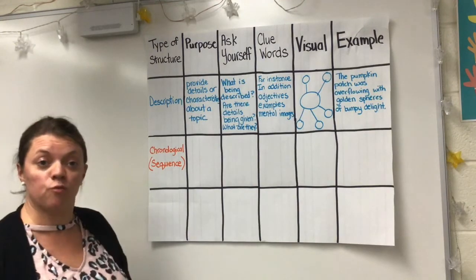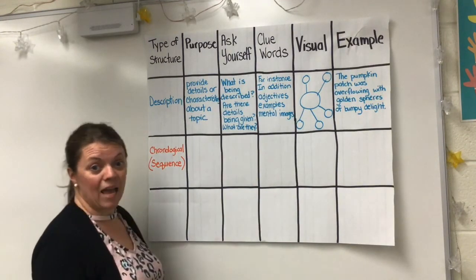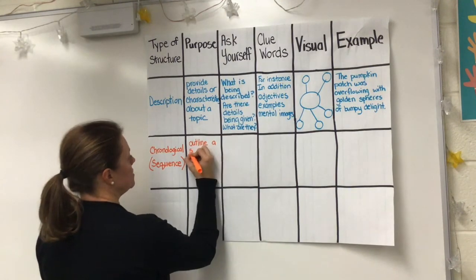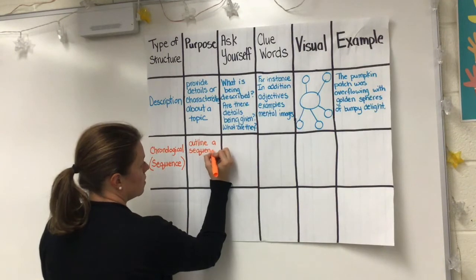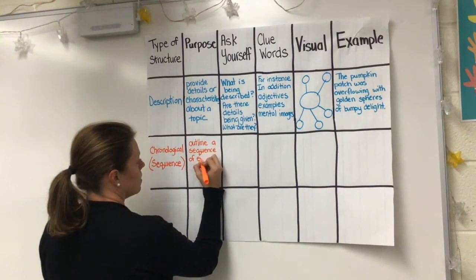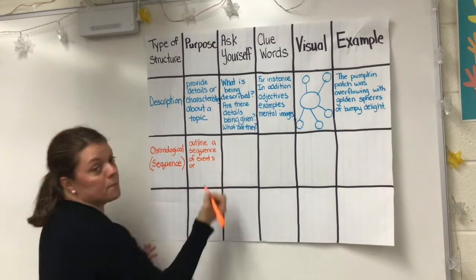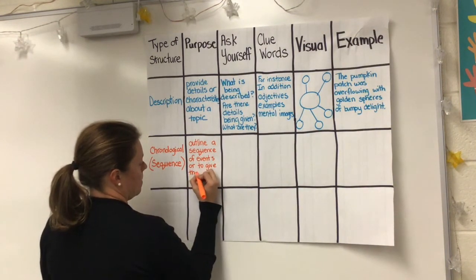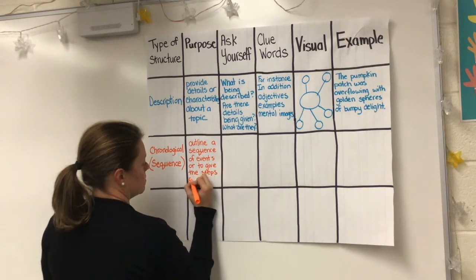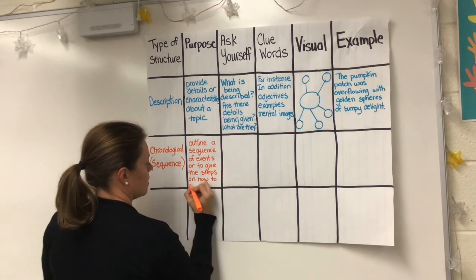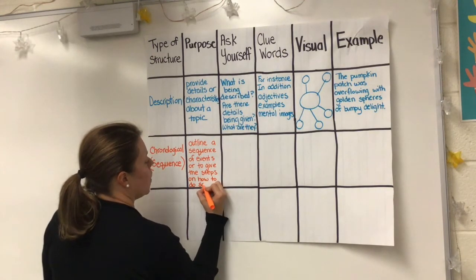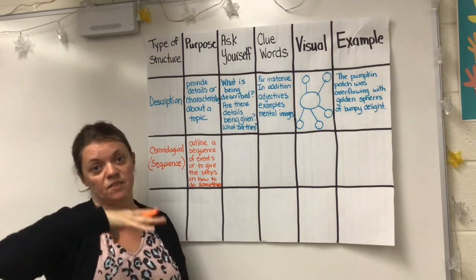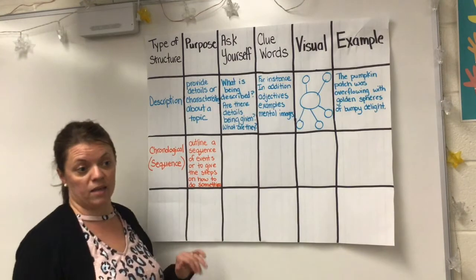The purpose of a chronological or sequence text structure is to outline a sequence of events, or to give the steps on how to do something. A chronological or sequence text structure can be both a narrative giving you lots of words, or could also just be a list of steps on how to complete something.